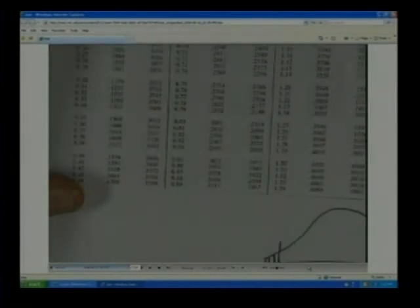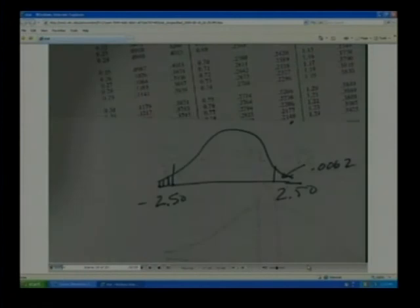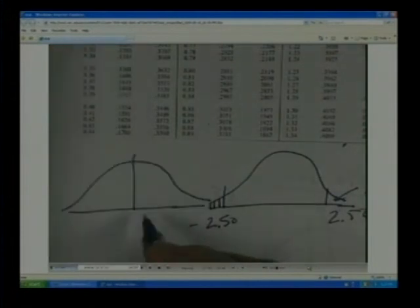Now the trick here, the thing that you want to watch out for, is that it's asking for the cumulative area from the left of 0.89.